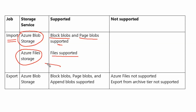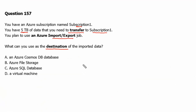In our question, Azure File Storage is available as an option, therefore it will be the correct one. Note that Azure export supports Azure Blob Storage only, and can be exported from block blobs, page blobs, and append blobs — Azure Files are not supported for export. We know that Azure import job supports Azure Blob Storage and Azure File Storage as destination. From the given choices, option B, Azure File Storage, is the correct answer, and the rest of the answers are incorrect.